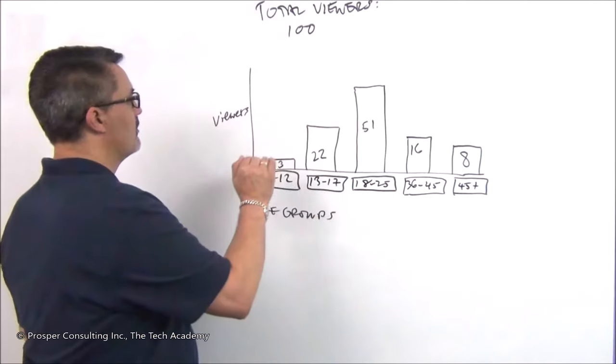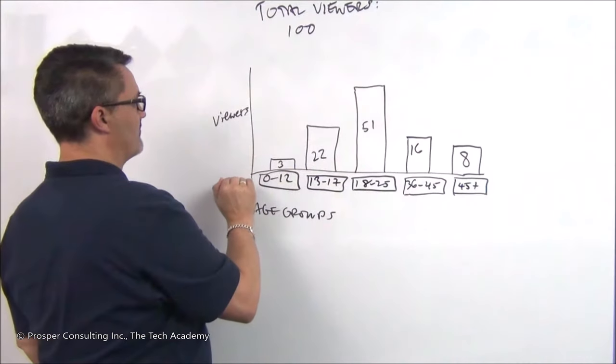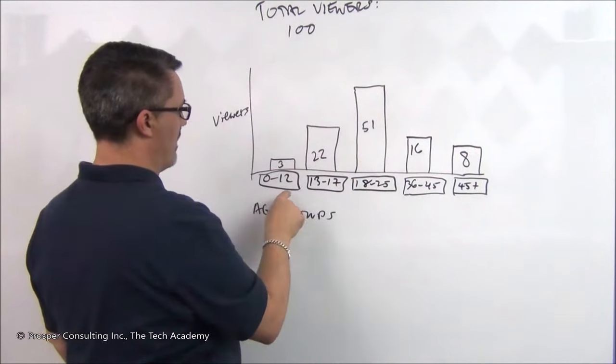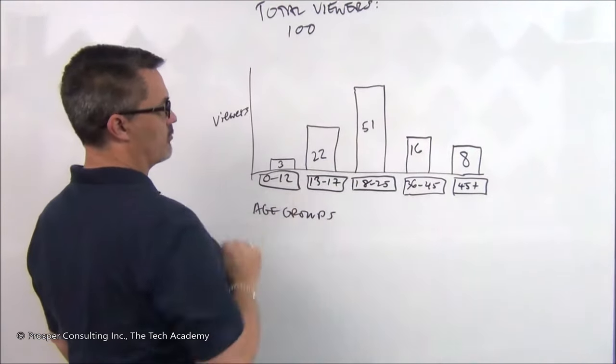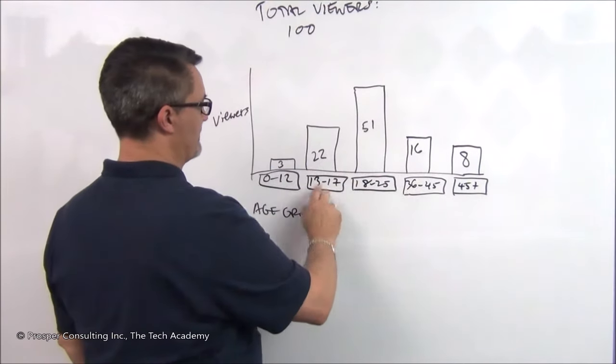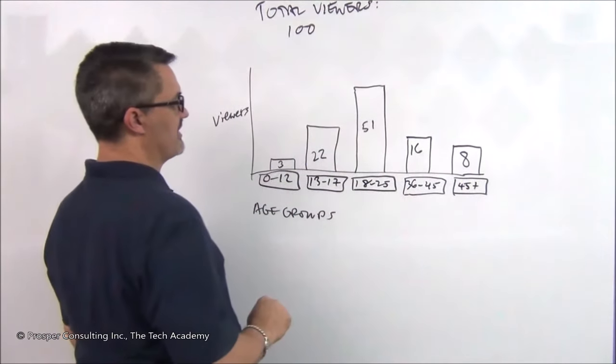You can see that if we had a total viewership of 100 and we graphed viewers vertically on the left here and we graphed age groups on the right, ages 0 to 12 would have three viewers of the movie, ages 13 to 17, 22 and so on you can see here.